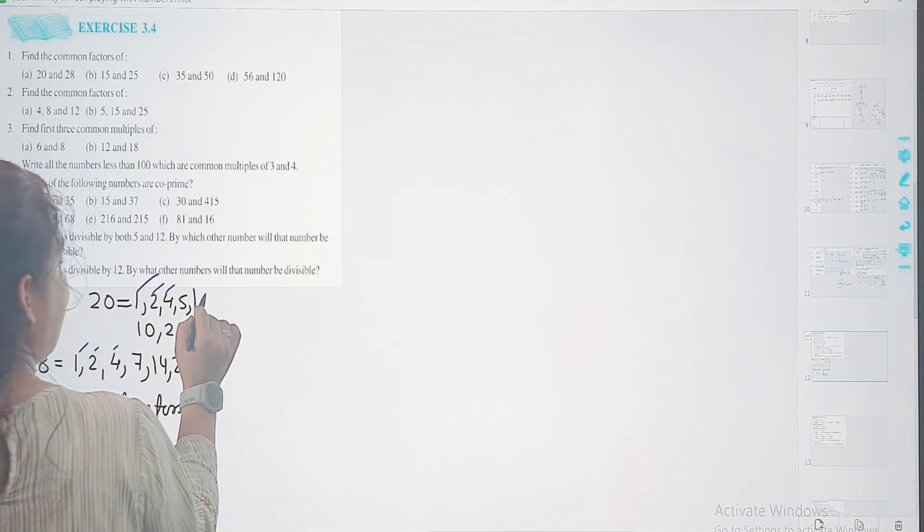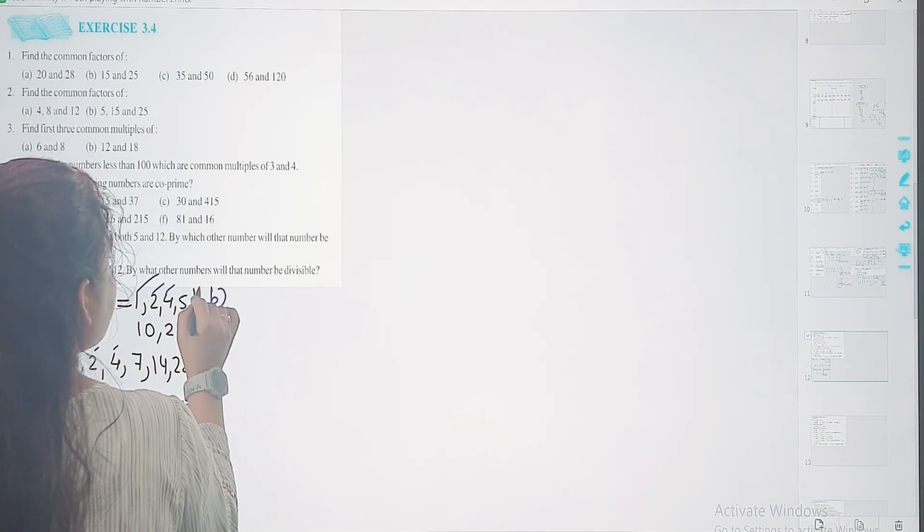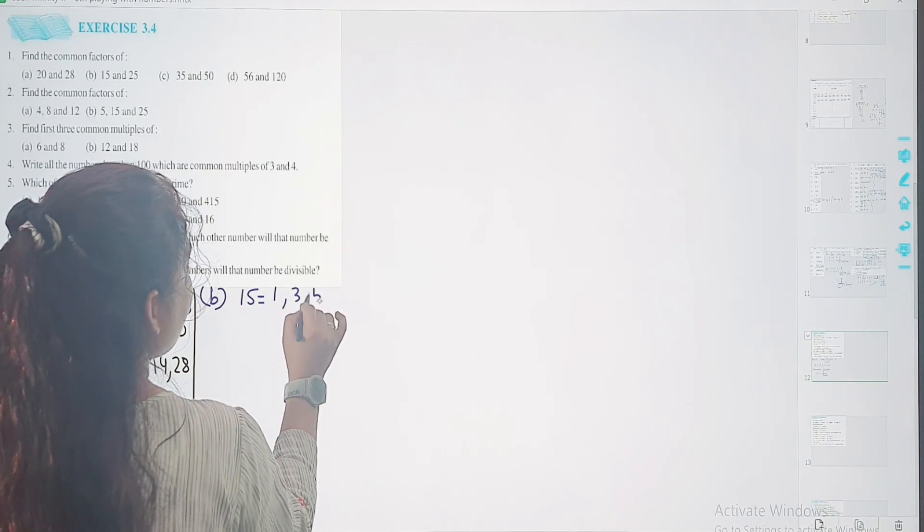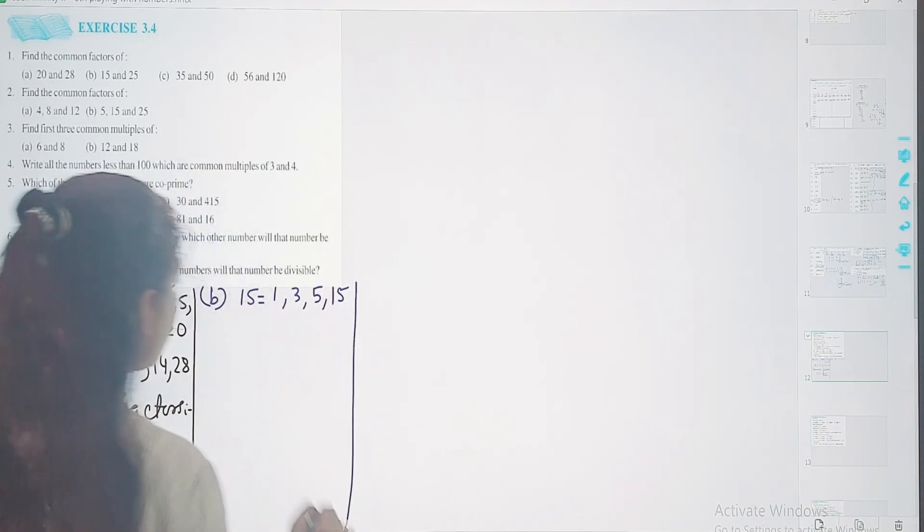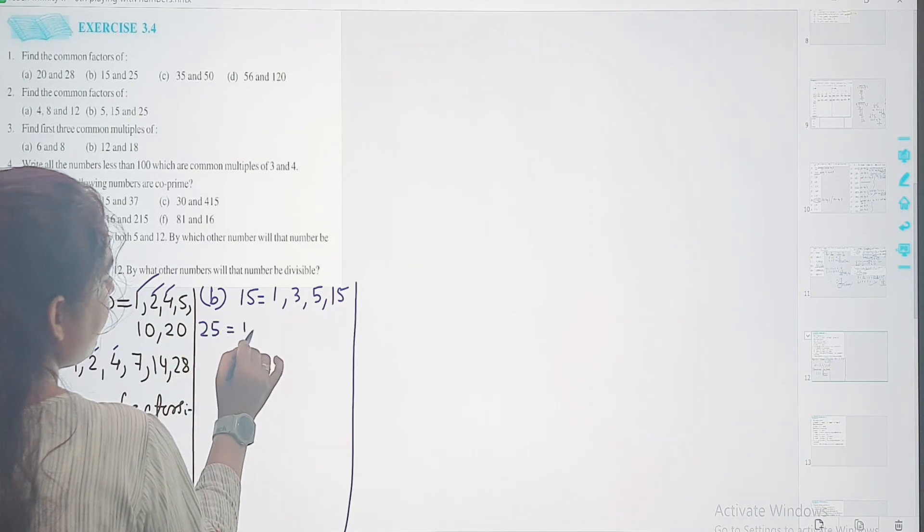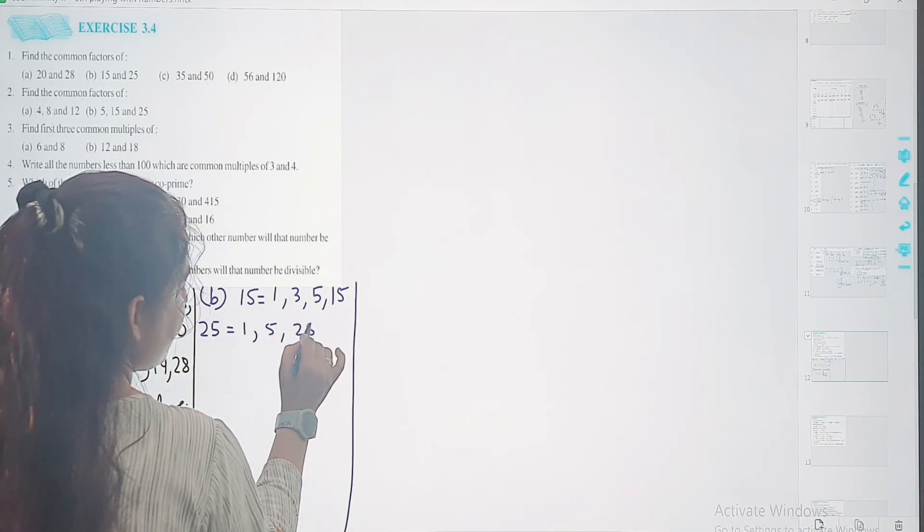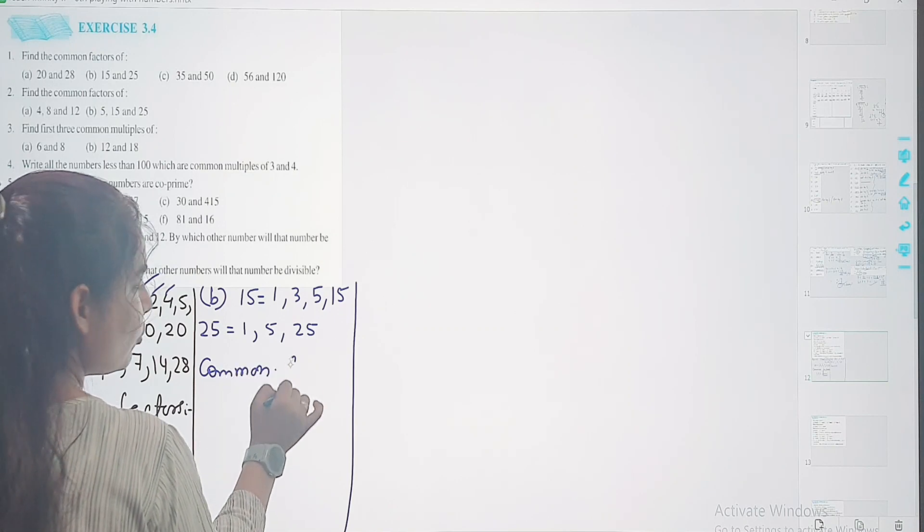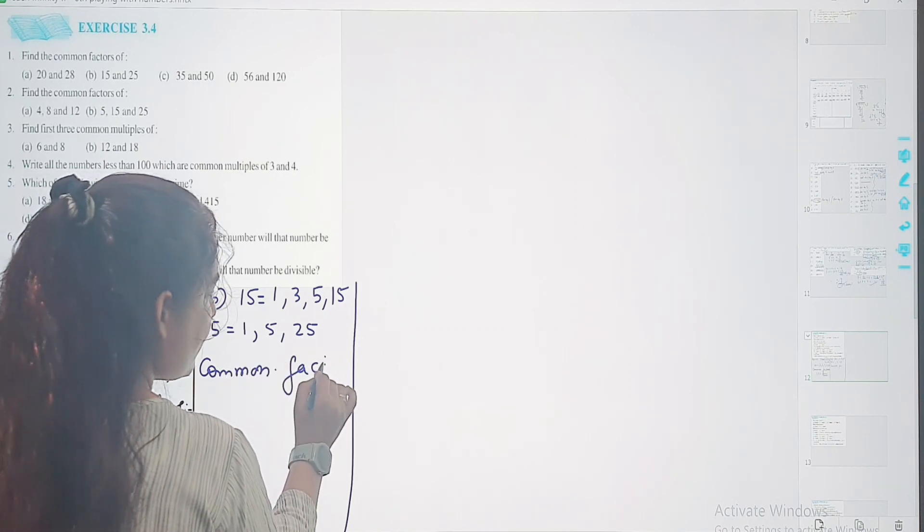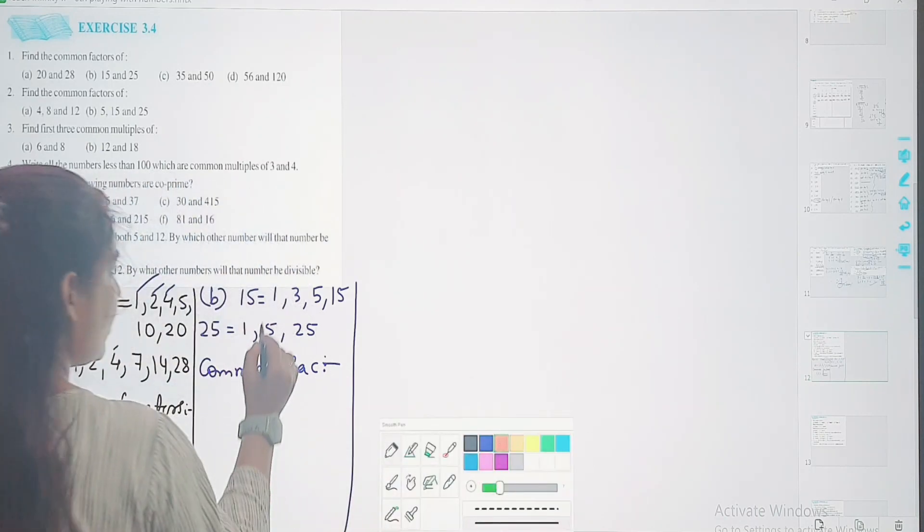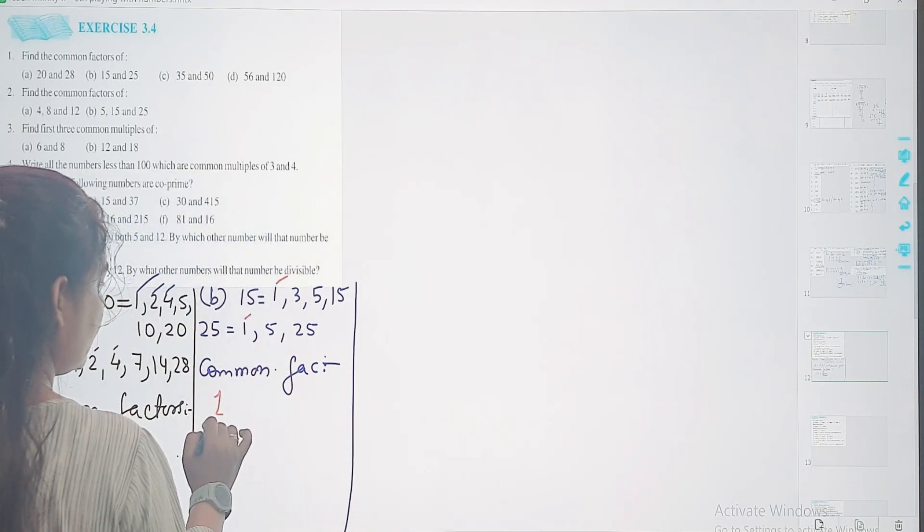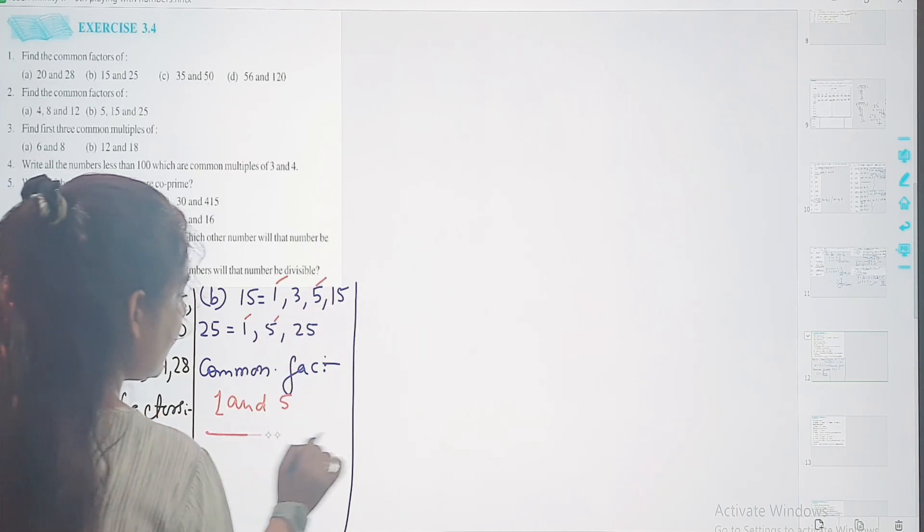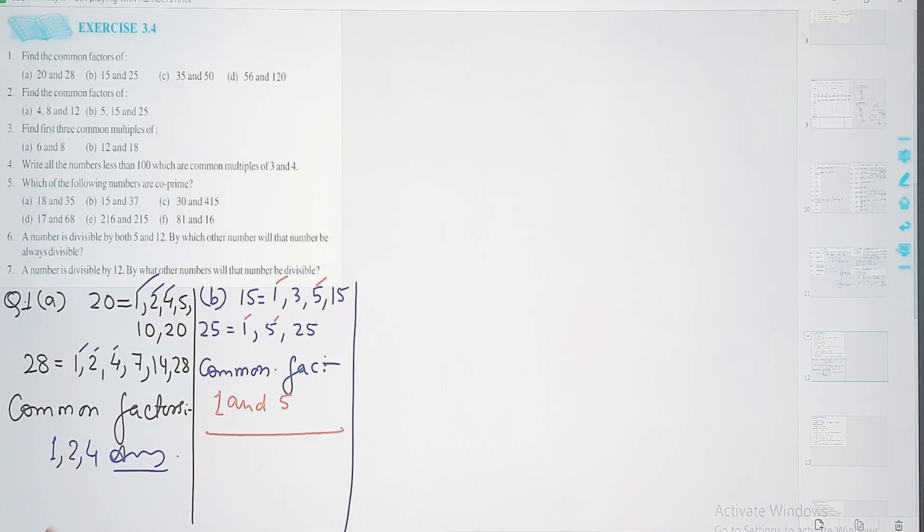Question number first ka A kar liye hai, ab B kar lietay hai. 15 ke common factors humkoe 1, 3, 5, and 15. Or 25 ke common factors humkoe 1, 5, and 25 itself. So common factors kya humkoe? Jo dono me humkoe, usi ko aapko likhna hai. 1 and 5. Nothing else. Done.